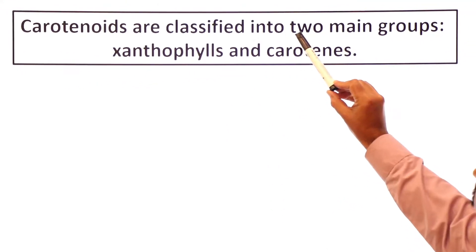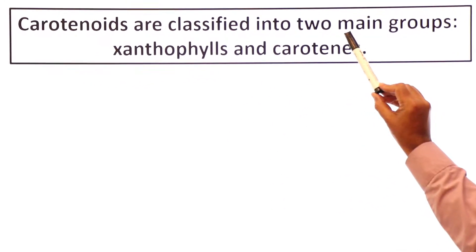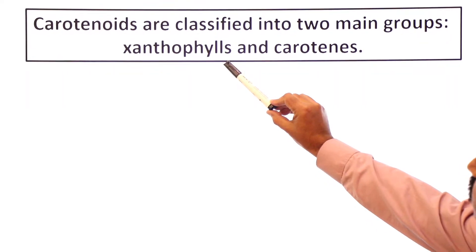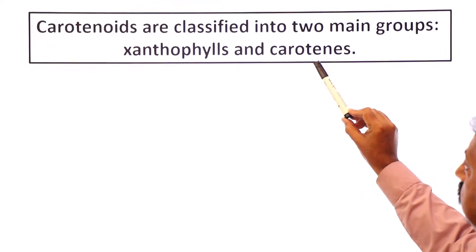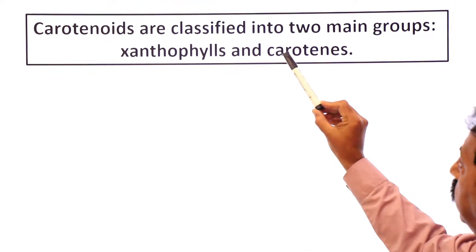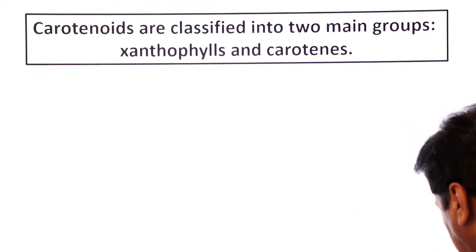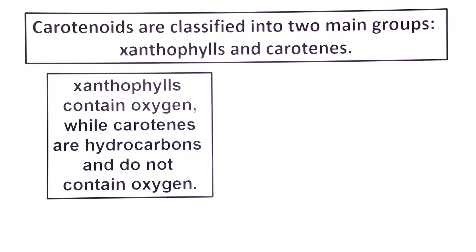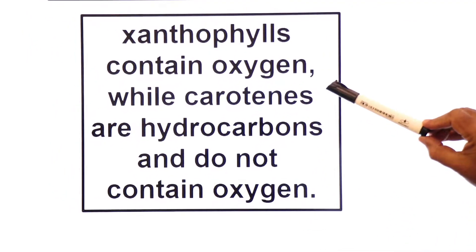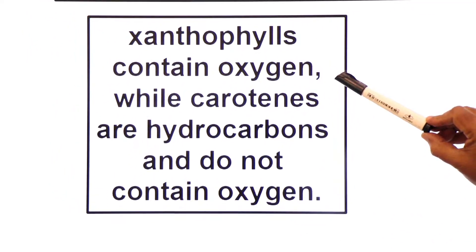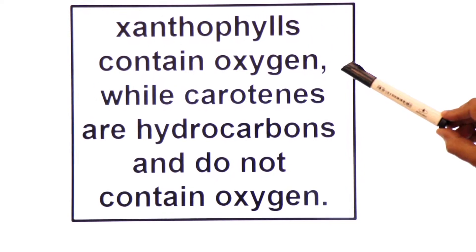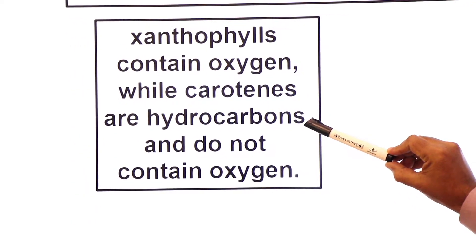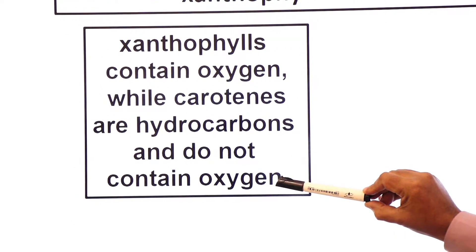Carotenoids are classified into 2 main groups: xanthophylls and carotenes. Now we will learn the difference between xanthophylls and carotenes. Xanthophylls contain oxygen, while carotenes are hydrocarbons and do not contain oxygen.